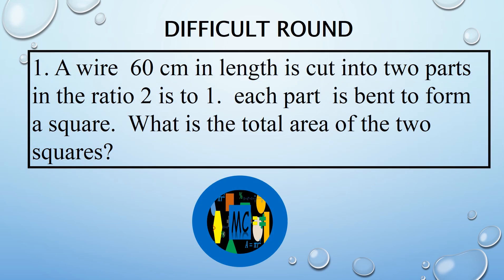A wire 60 cm in length is cut into two parts in the ratio 2 to 1. Each part is bent to form a square. What is the total area of the two squares?